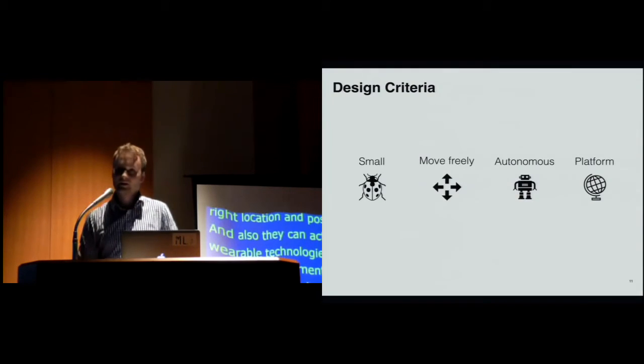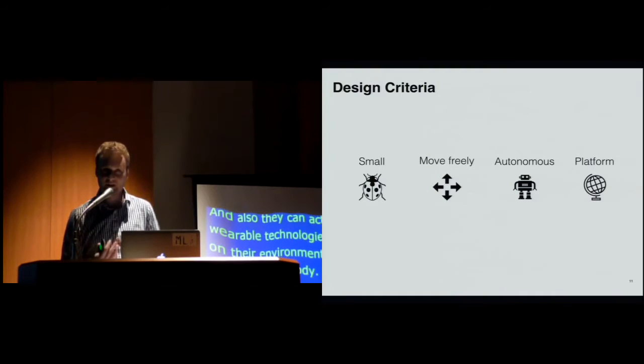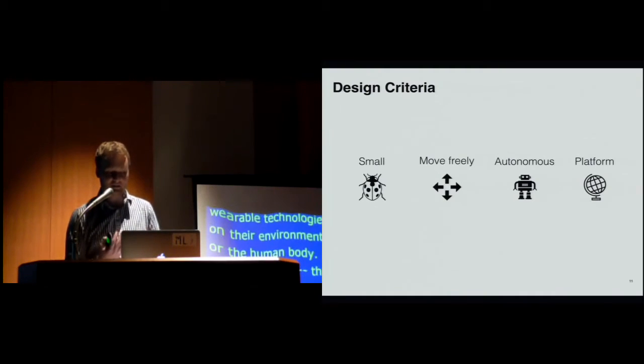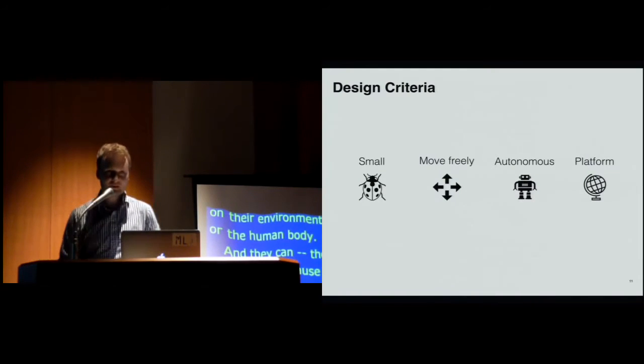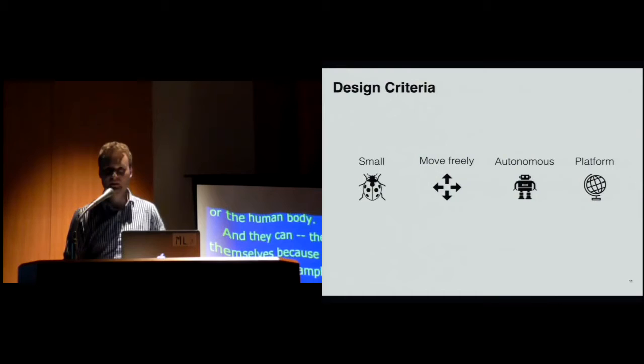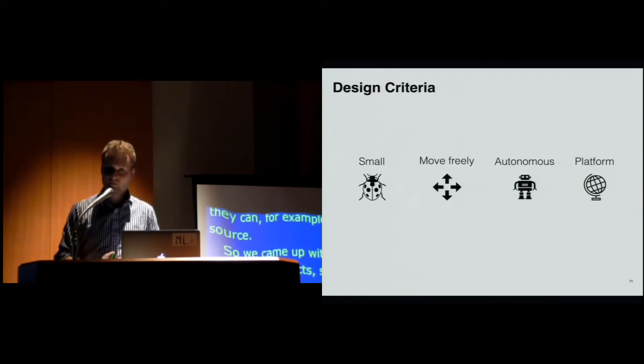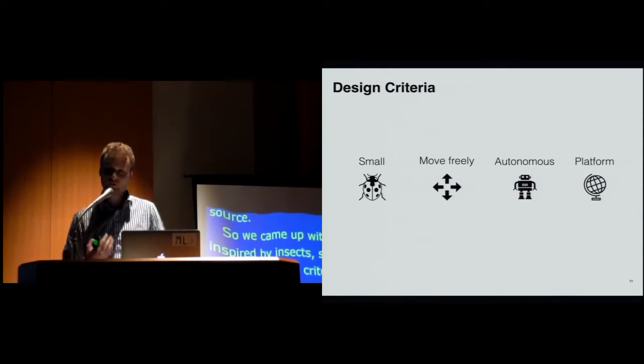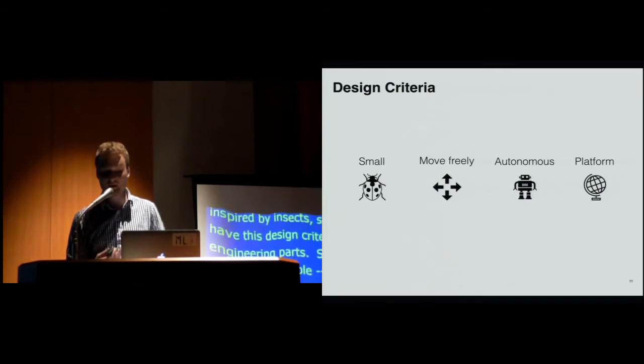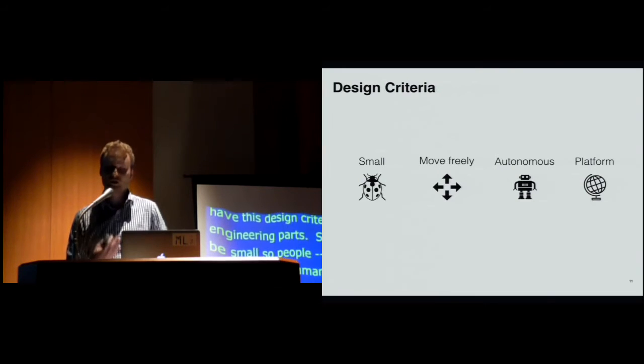So we came up with this, kind of inspired by insects, small insects. We have this design criteria for the engineering parts. So the robot should be small, so they're very unobtrusive to the human wearer. Also, they should be able to move around freely on the human clothing. They should be autonomous, so the person who wears them doesn't need to worry about them, and they can go throughout the day during different tasks. And this should be a platform so people can experiment with it and add more functionality.